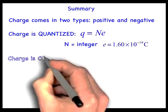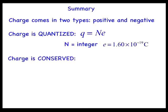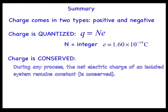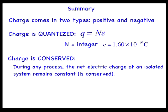Next, charge is conserved. The law of conservation of charge is stated as follows: During any process, the net electric charge of an isolated system remains constant.